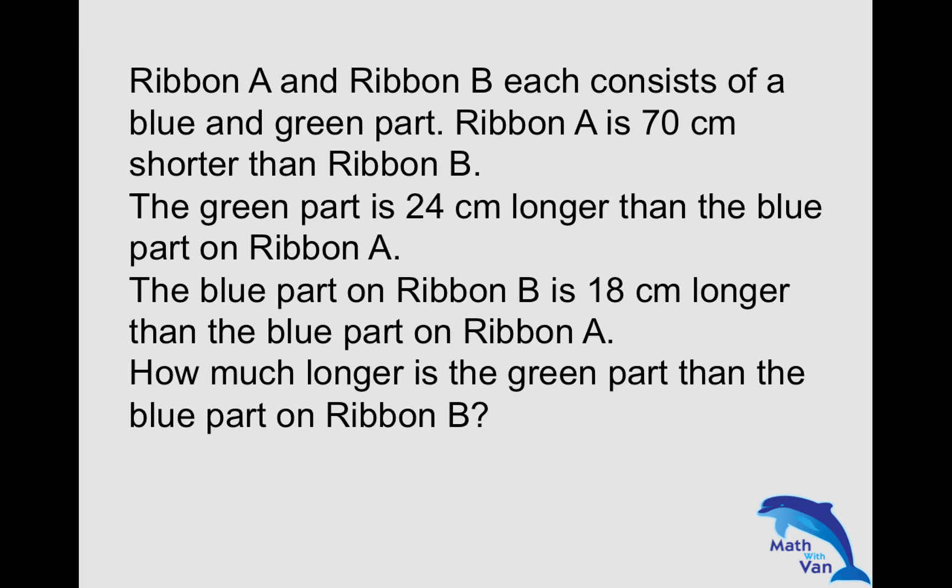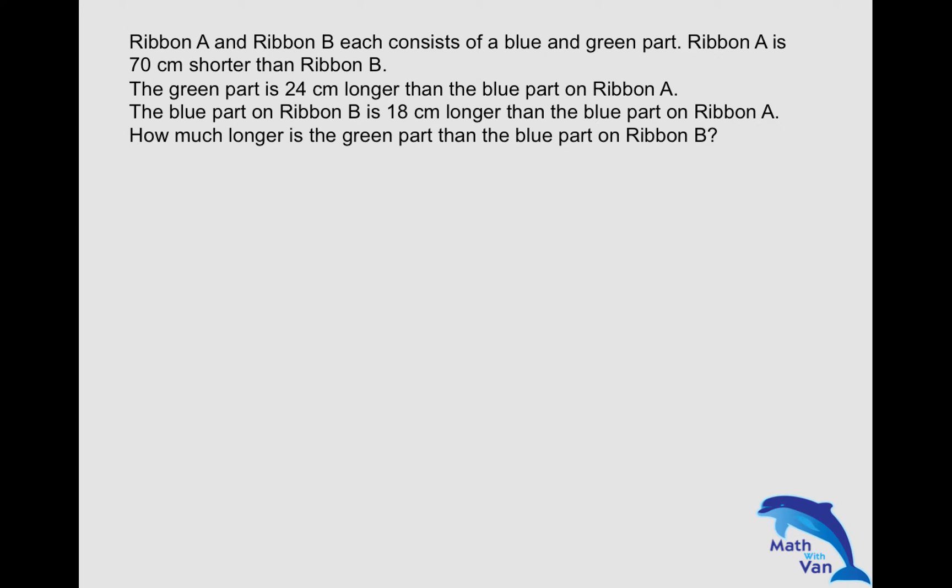So bear in mind, the question is asking for the difference between the green part and the blue part on Ribbon B. In this kind of question, it's very lengthy, so we have to break them down into smaller parts and attack them part by part. Let's take a look at how it can be easily solved by analyzing each individual sentence.